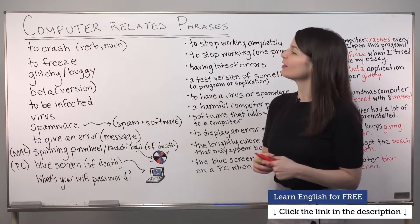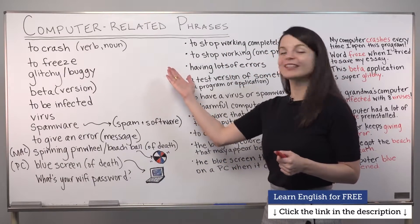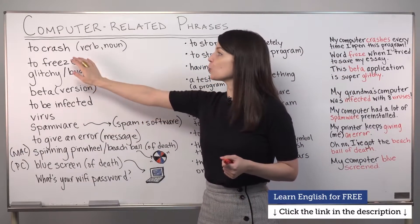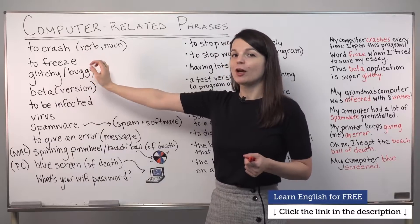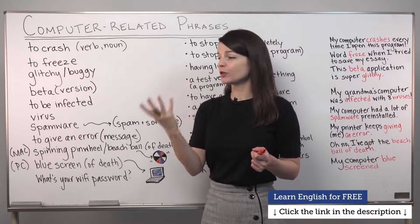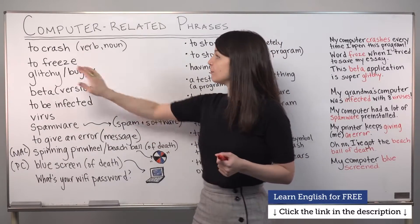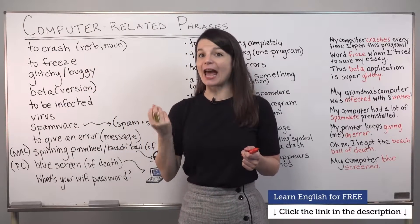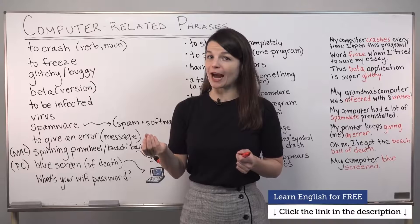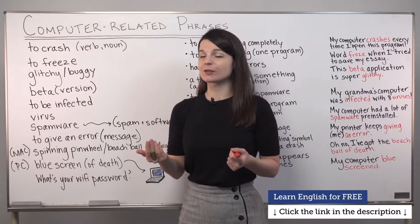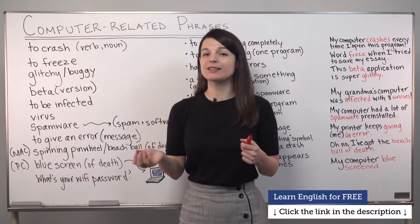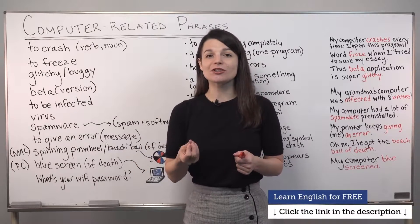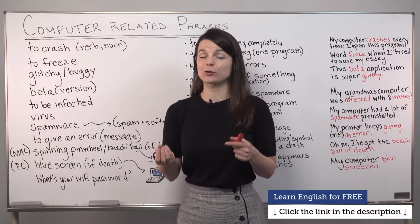I want to begin with an important word that can be used as a verb and as a noun. It is 'to crash.' One point here: when you're using this word in speech, make sure this A sound is clearly pronounced as an A sound — 'to crash.' If you don't use this A sound properly, it could sound like 'crush.' Make sure this is an A sound: to crash.